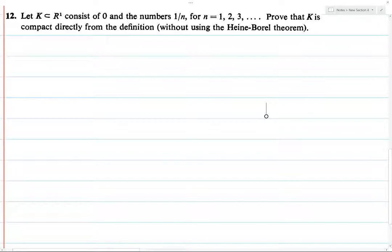So this open interval surrounding 0 will contain infinitely many elements of K, because it will be in the neighborhood of 0, and all of these things of the form 1 over n converge to 0.